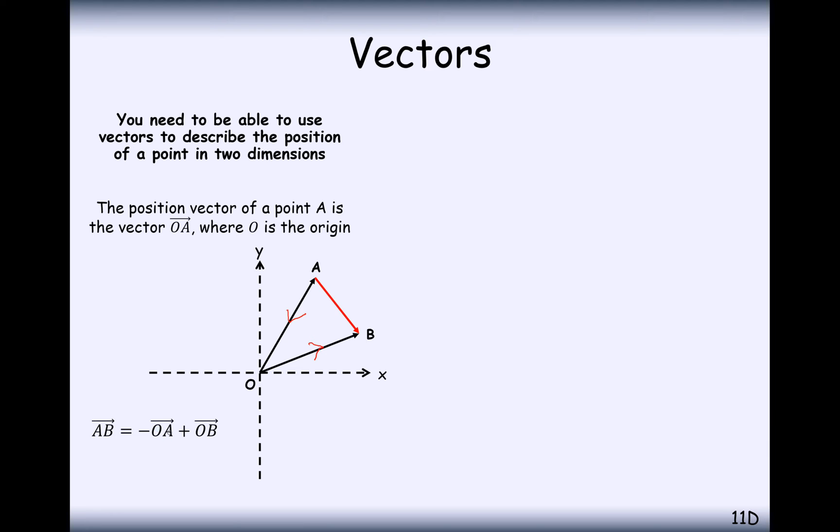So we're going to have to go back along A, which is the minus OA vector, and then plus the OB vector. So it's rearranged to the B coordinate effectively, take away the A coordinate.